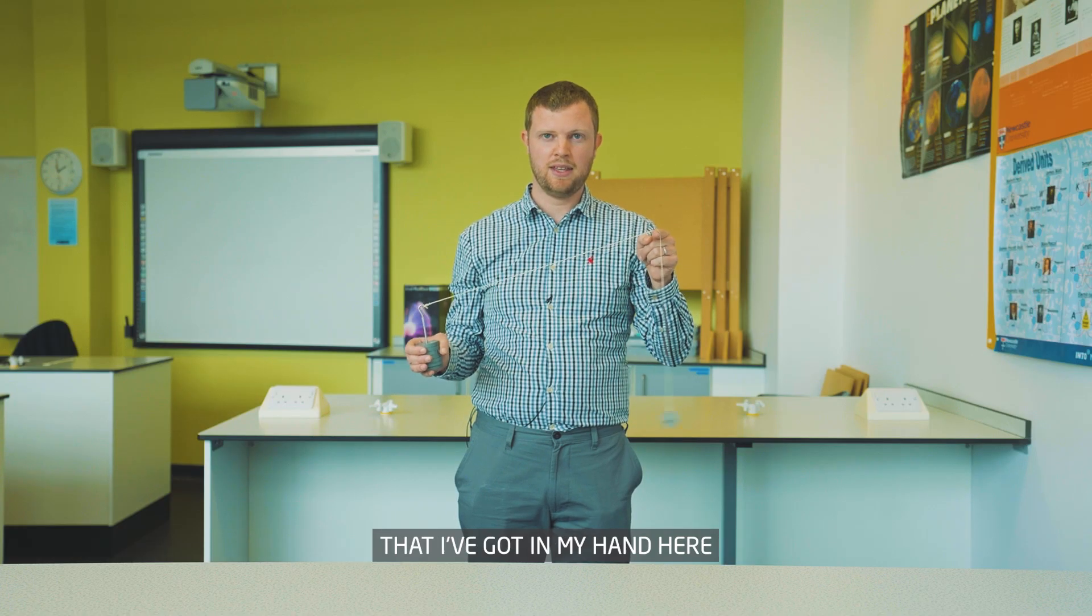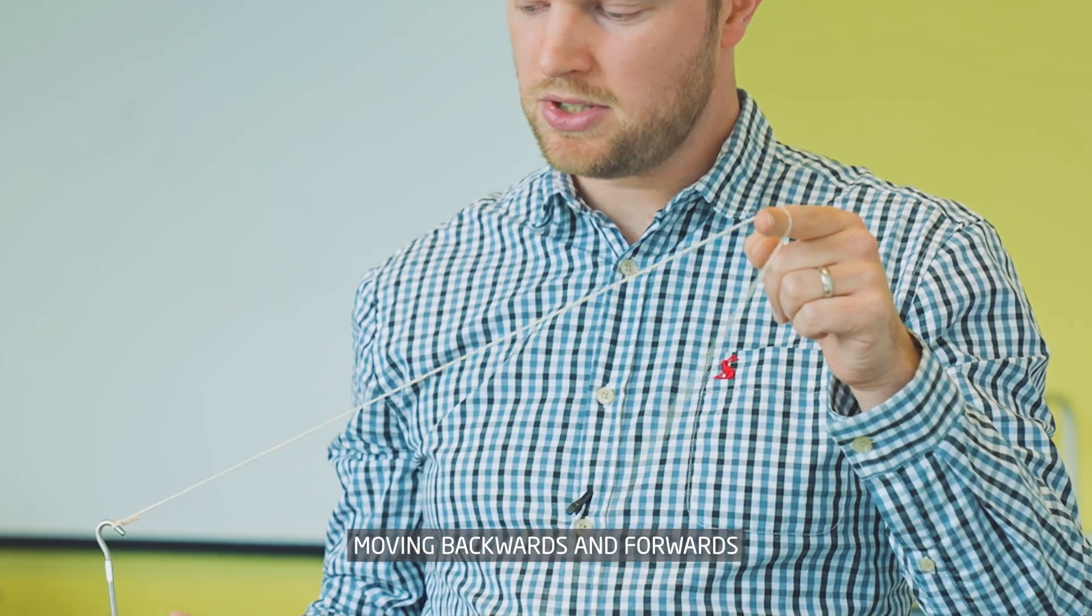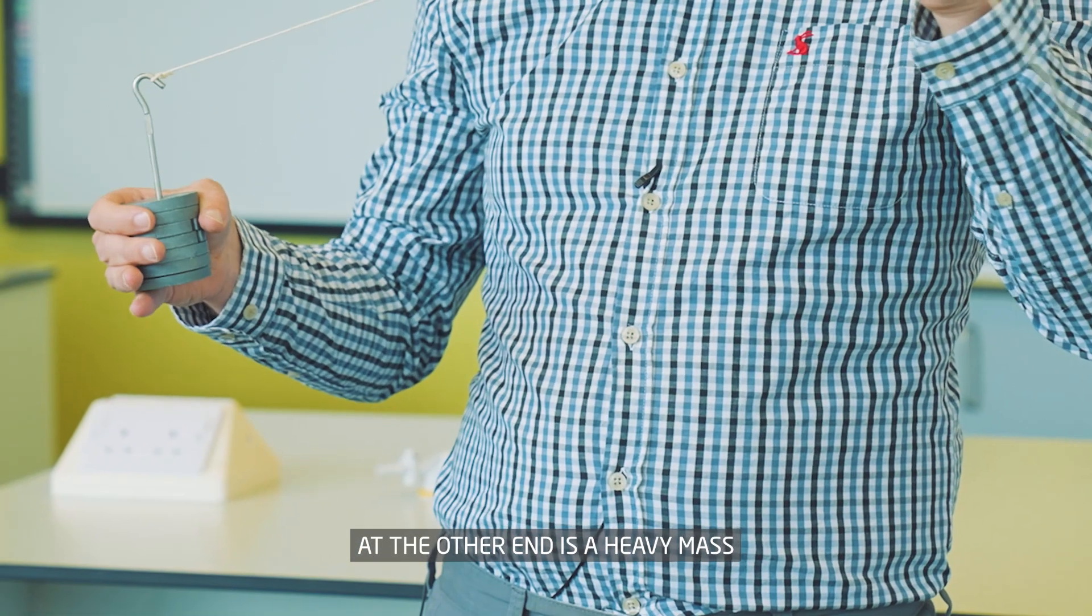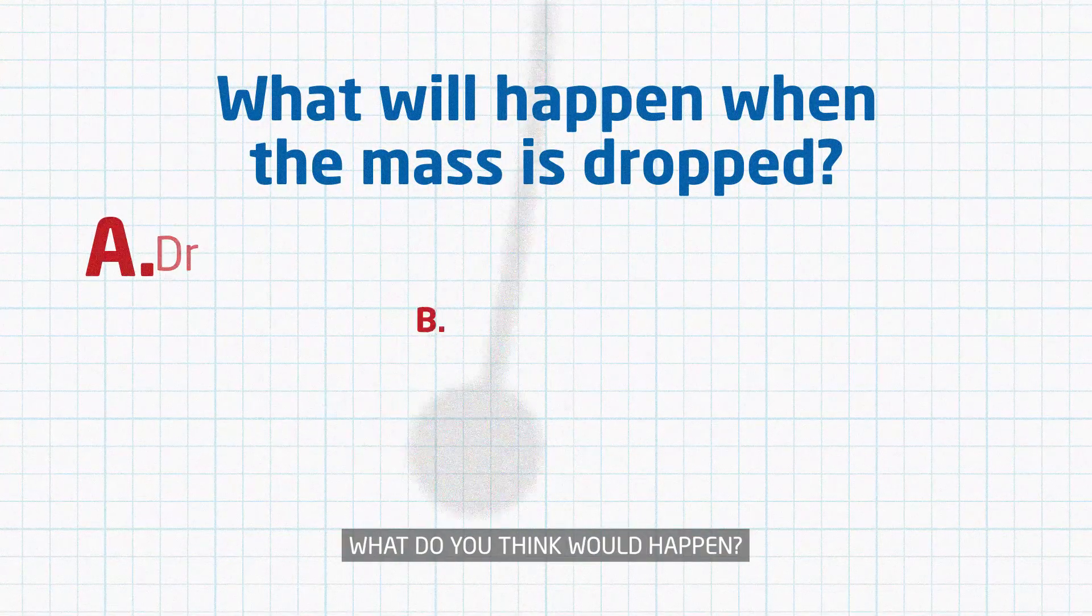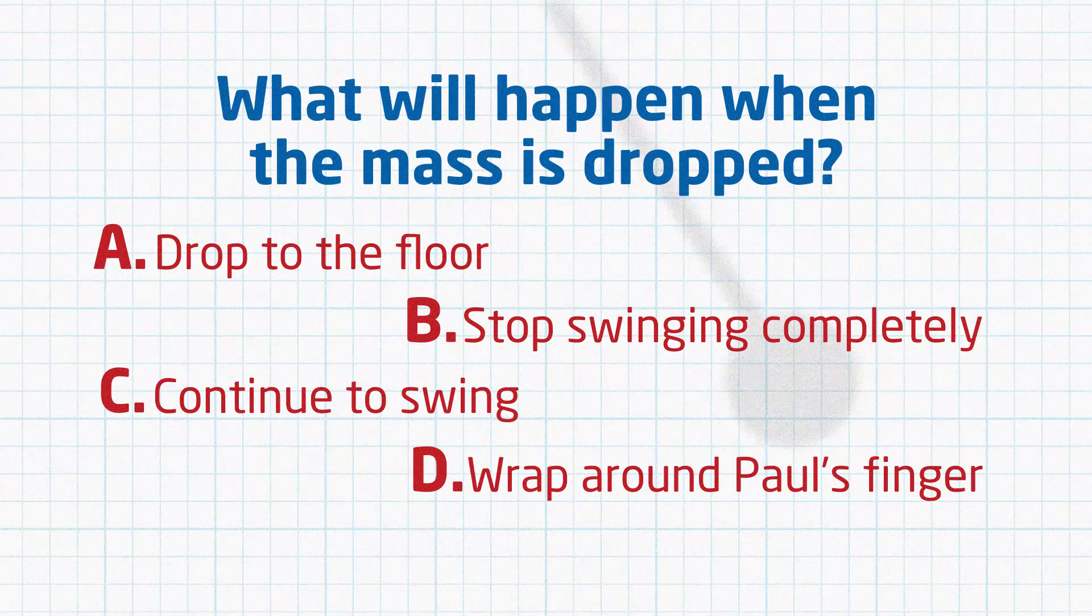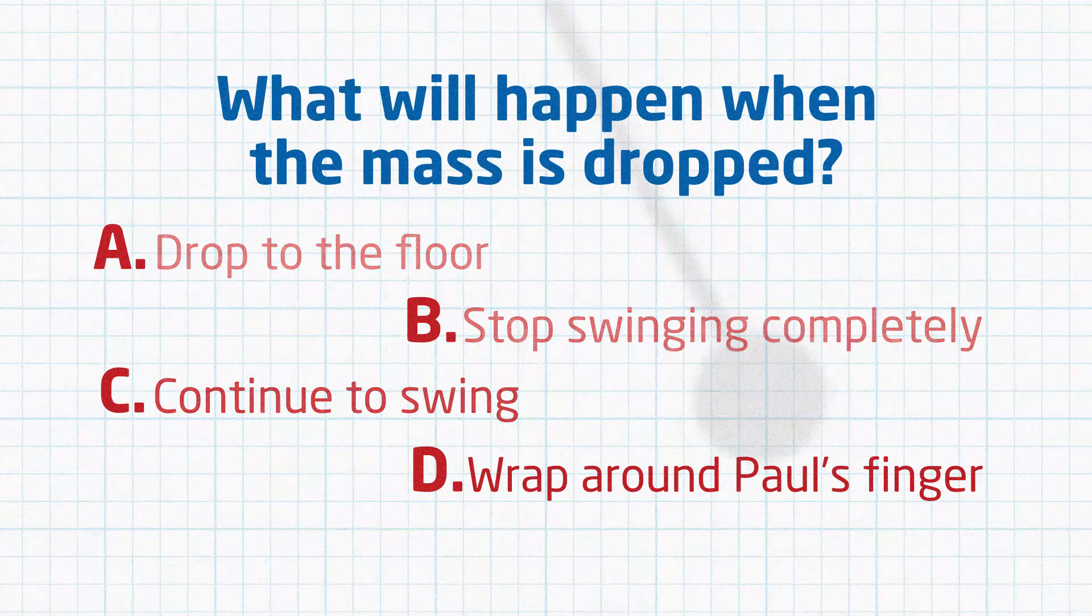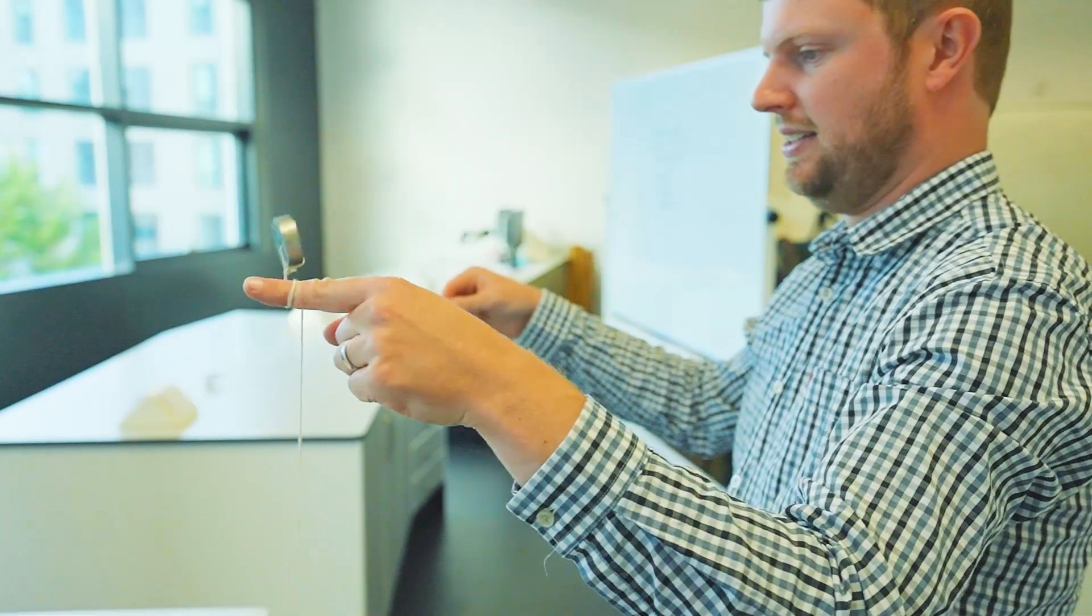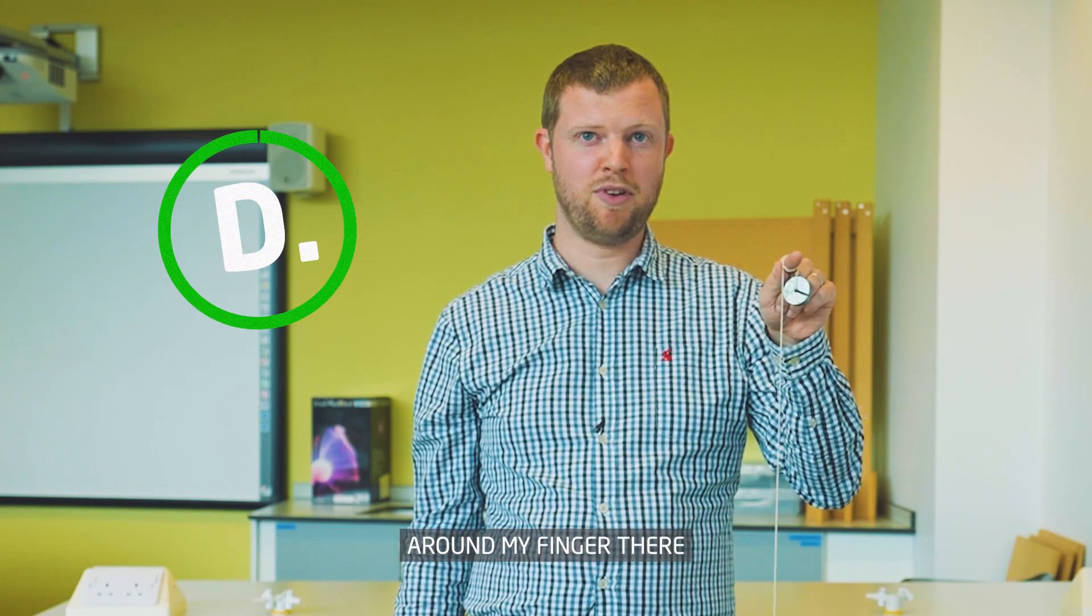I've got a more advanced pendulum system here. I've got a pendulum moving backwards and forwards, and attached to that at the other end is a heavy mass. If I was to let go of this mass, what do you think would happen? As you can see, the pendulum is actually wrapped around my finger.